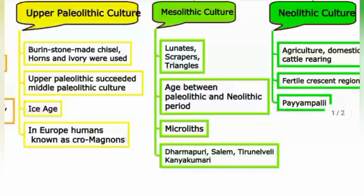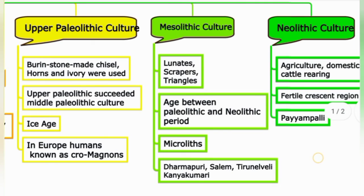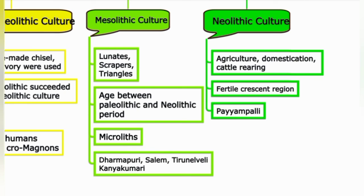Mesolithic culture: Lunates, Scrapers, Triangles — age between Paleolithic and Neolithic periods. Microliths found in Dharmapuri, Salem, Tirunelveli, and Kanyakumari. Neolithic culture: agriculture, domestication, cattle rearing. Fertile Crescent region — Egypt, Iran, Palestine, Iraq. Neolithic evidence sites include Paiyampalli in Vellore district and many sites in the Dharmapuri region.